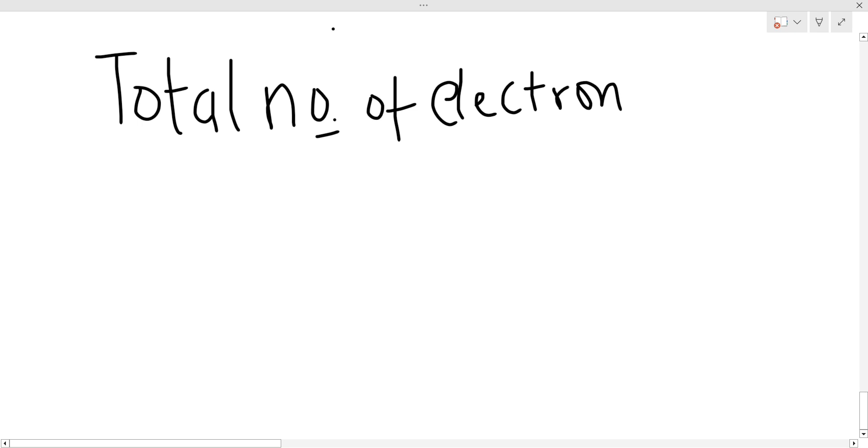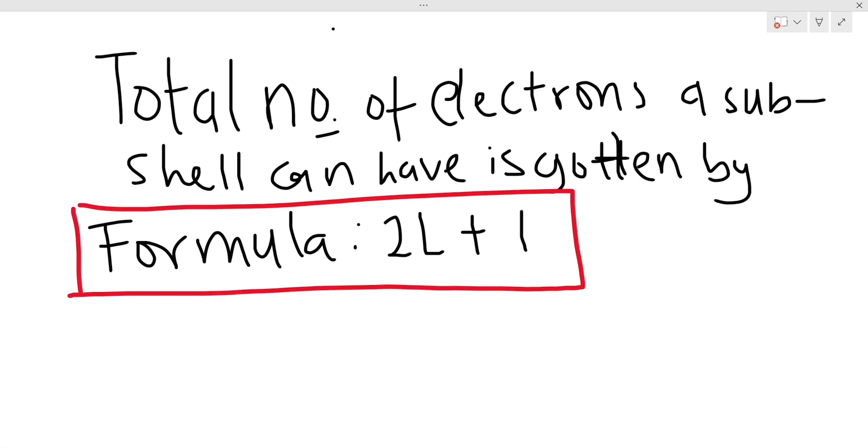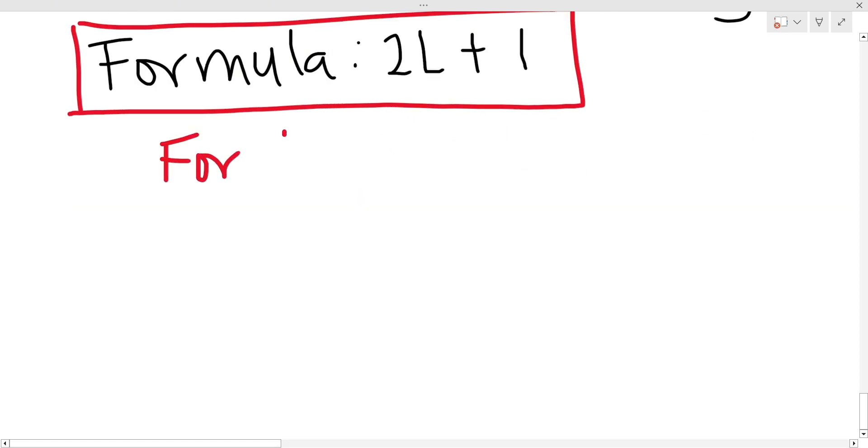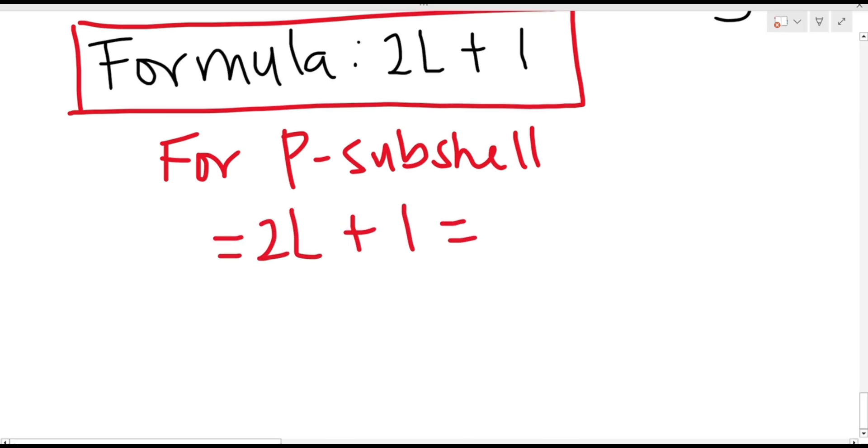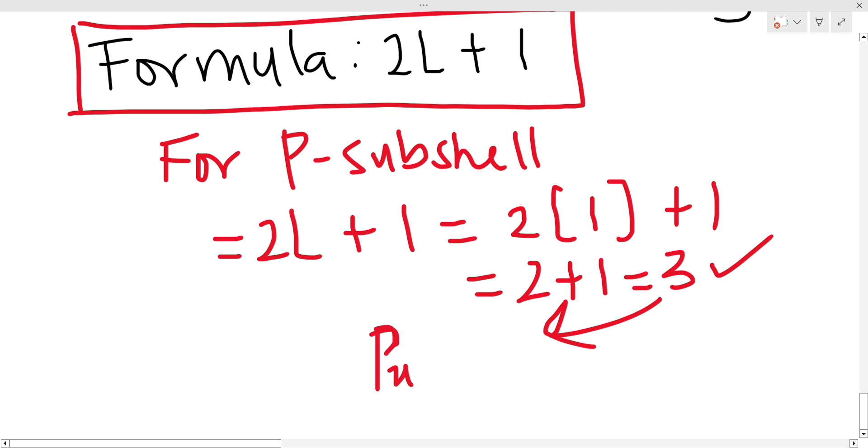The total number of electrons in the subshell can be gotten by the formula 2l plus 1, where l is the azimuthal quantum number. Now let's take an example for the p subshell where the azimuthal quantum number is 1. 2l plus 1, inserting 1, we have 2 into brackets 1 plus 1, that's 2 plus 1, and that's 3. This tells us that there are three orbitals in the p subshell.